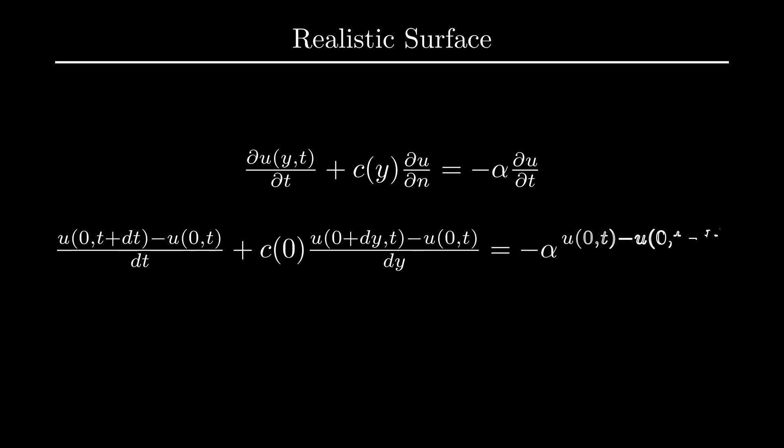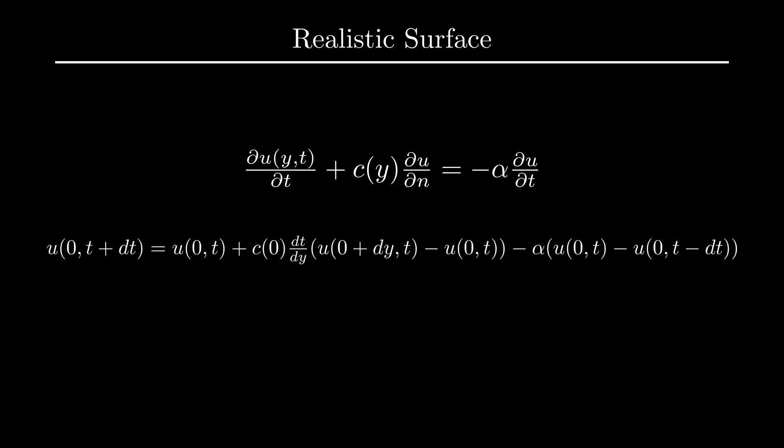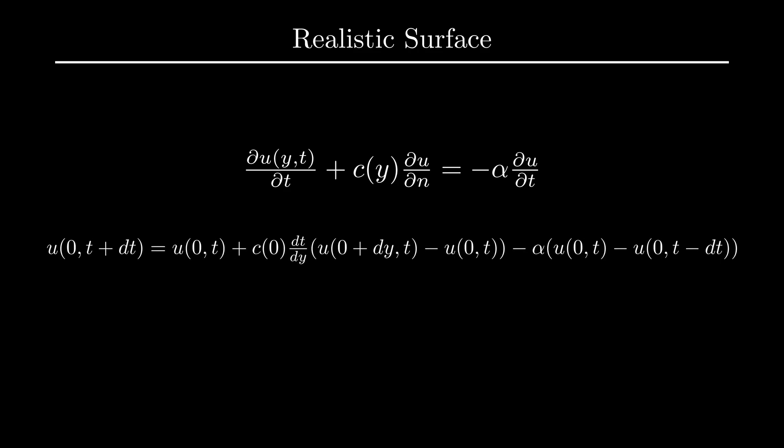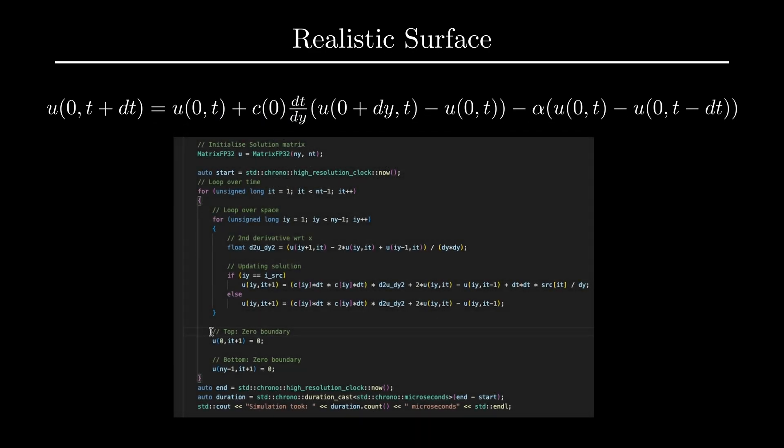At the surface, damping boundary condition can be written discretely using the finite difference approximation. This discrete form can be rearranged, similar to what I did with the wave equation, and used the present and past to get the future. This effect can be implemented in code fairly easily by replacing the boundary condition at the top with the damping boundary condition.